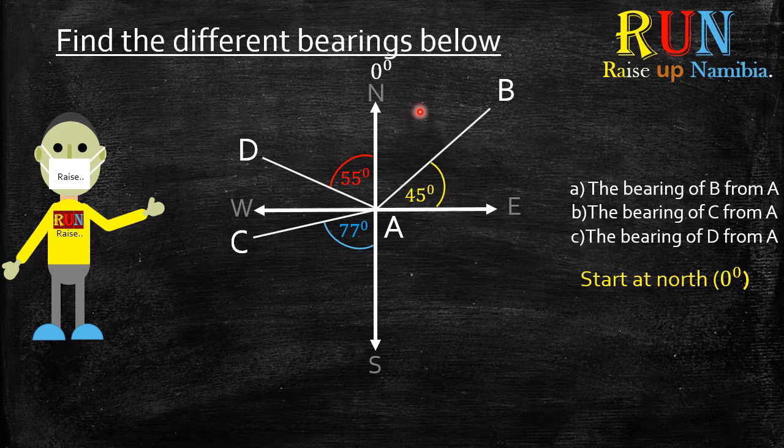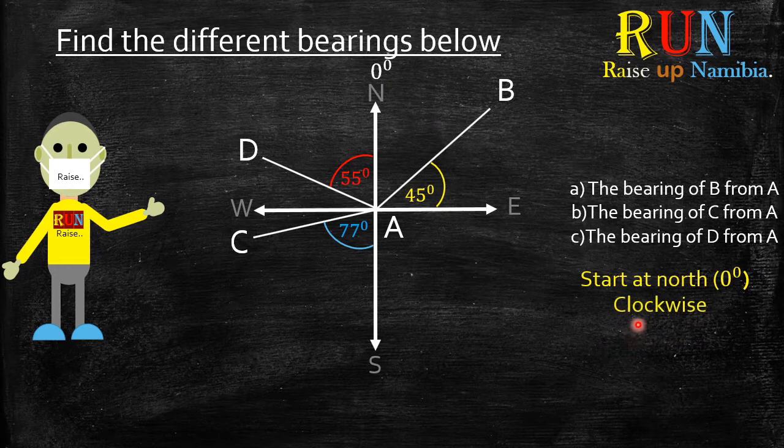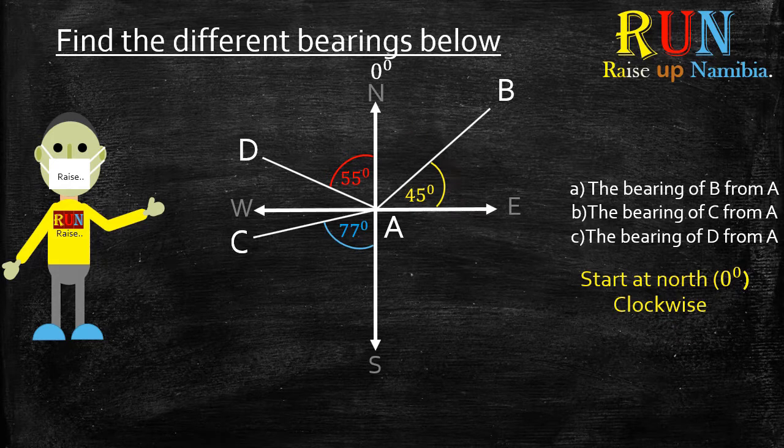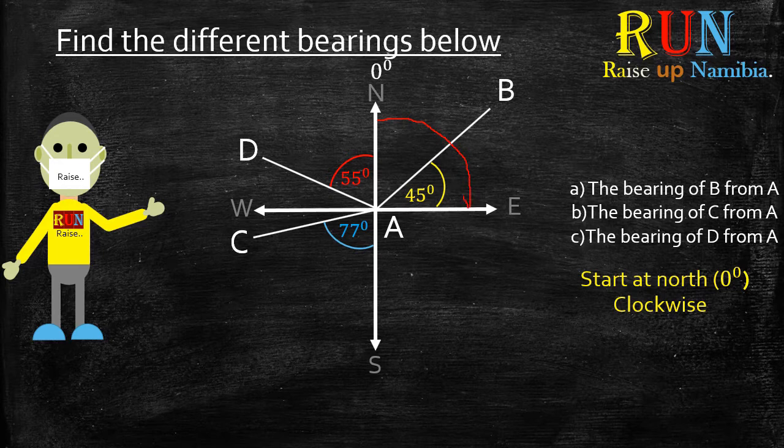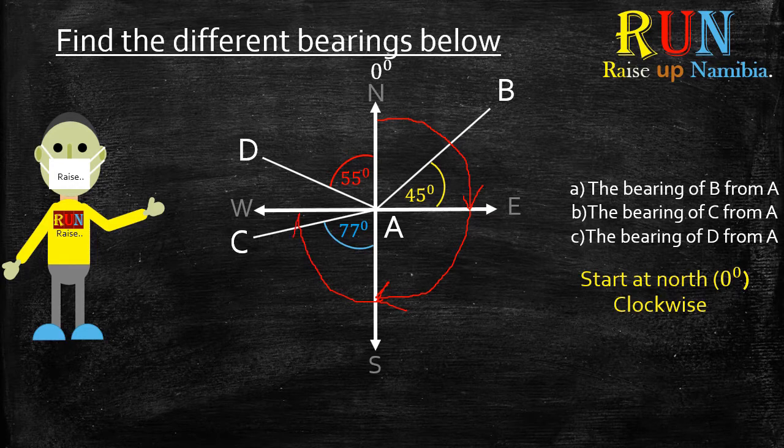Now property number two is that when you start at the north, you always move in a clockwise motion. What does this mean? Let me just draw the lines. This means when you start from the north, you move in this direction. This is what we call a clockwise motion.